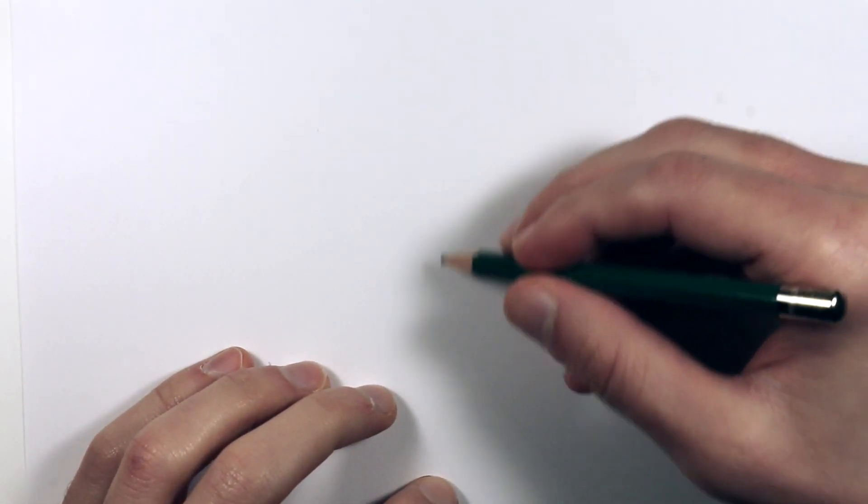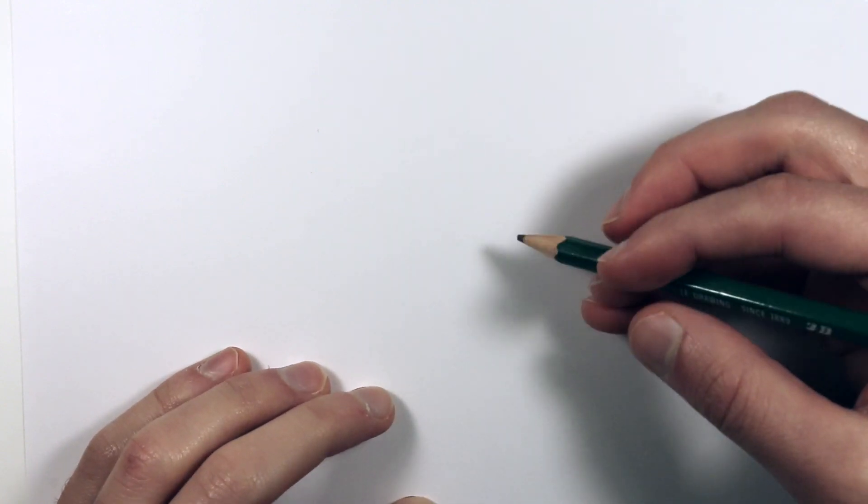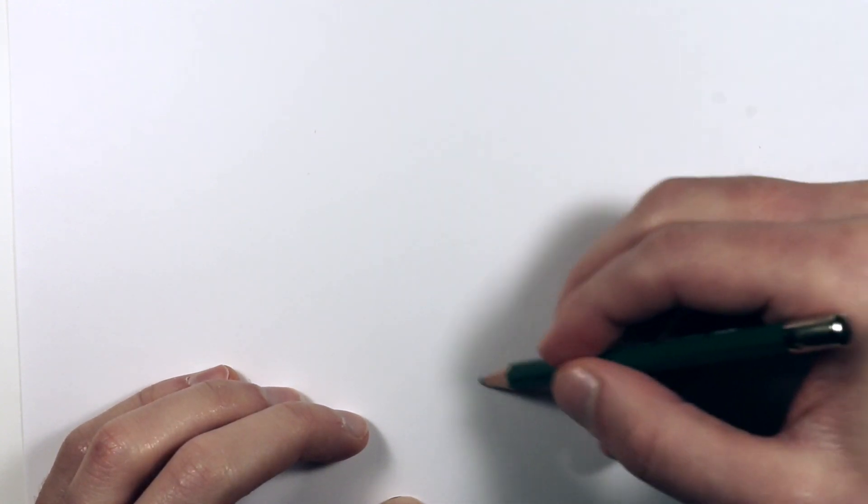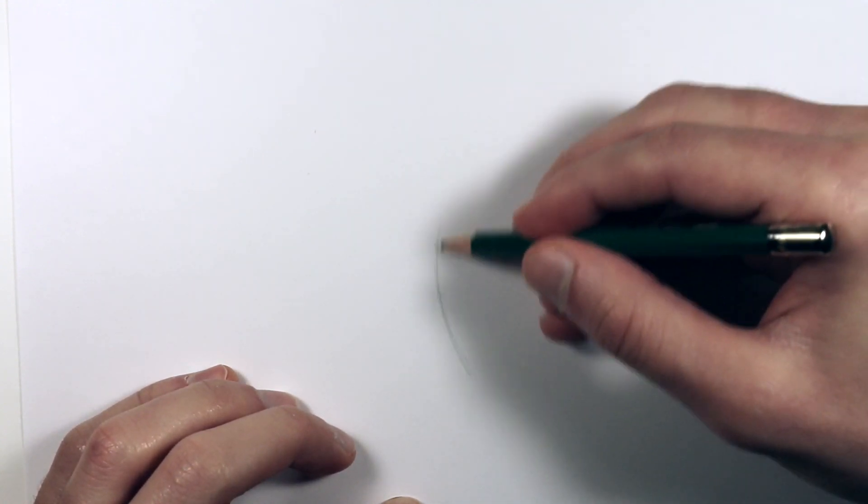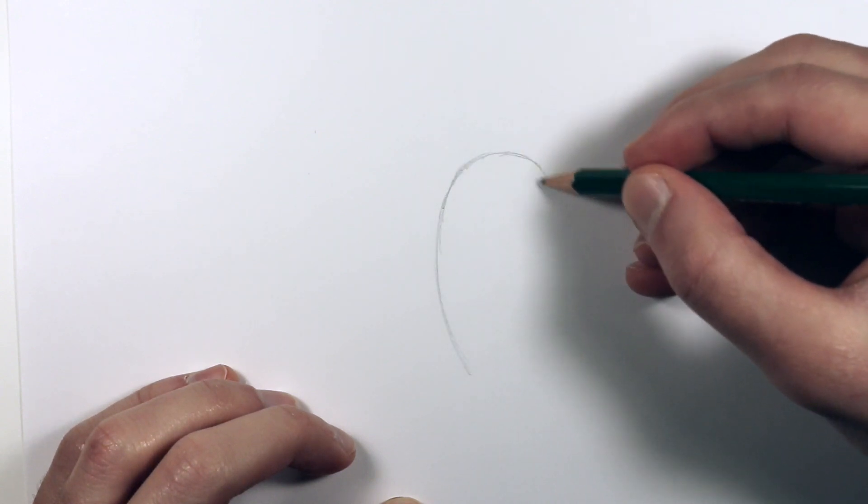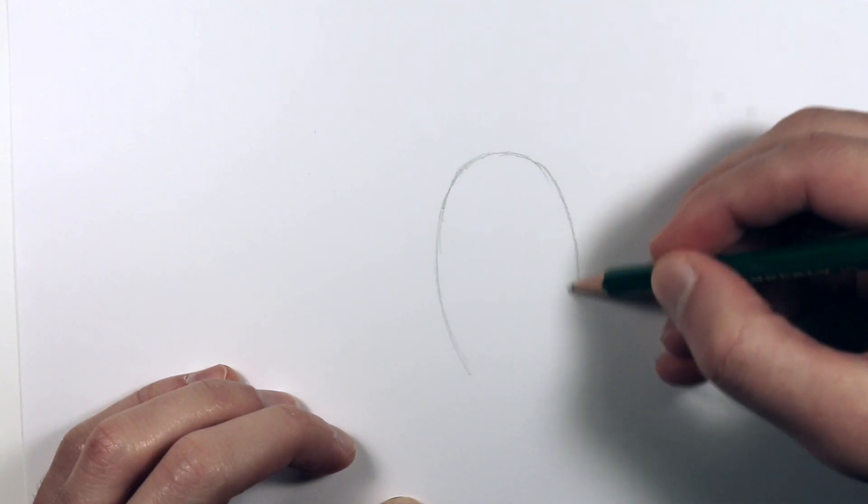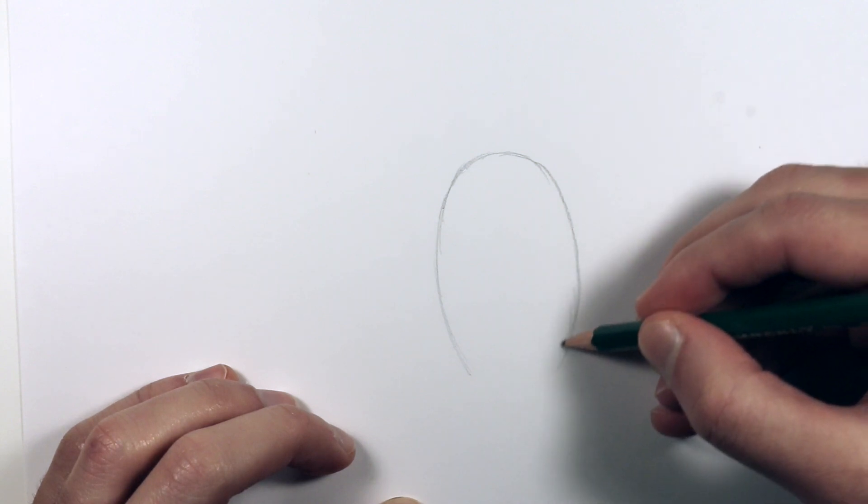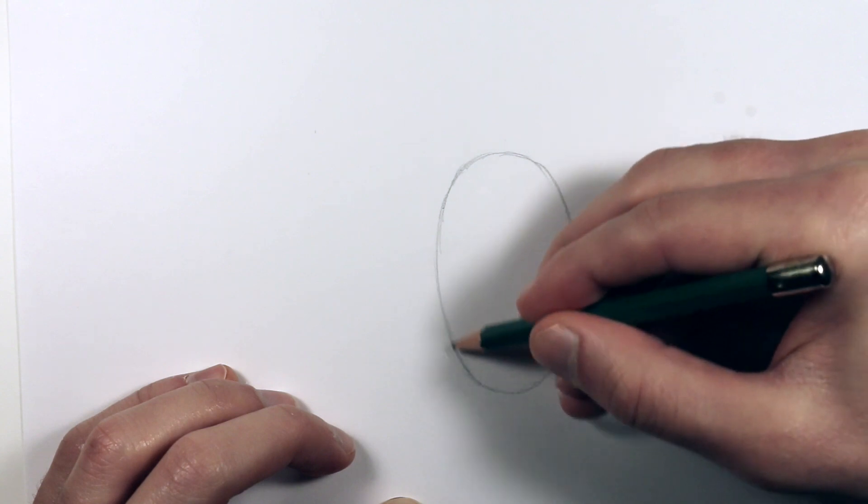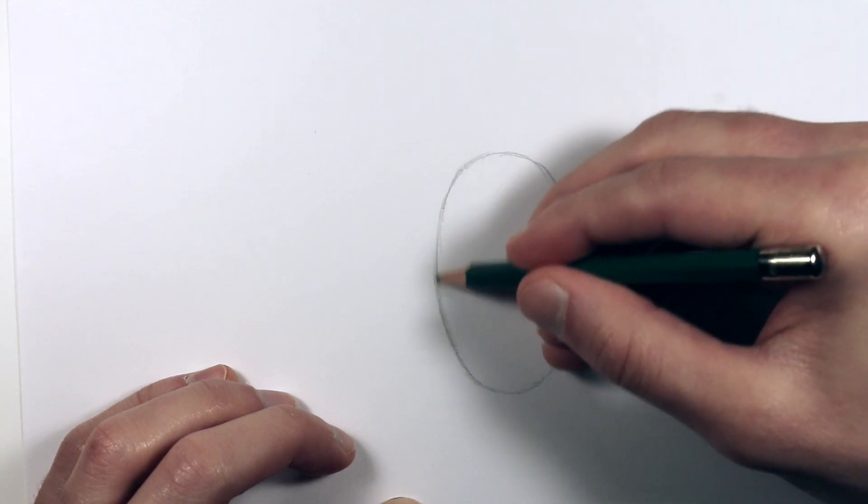So the first thing we'll do is draw the fattest part of the pumpkin—the center part—and we're going to sculpt it from there. So it's kind of like a really skinny egg-type shape. Just sketch it like this. And the thing about pumpkins is they don't have to have perfect shapes. Pumpkins come in all kinds of different shapes and sizes.